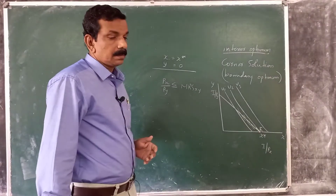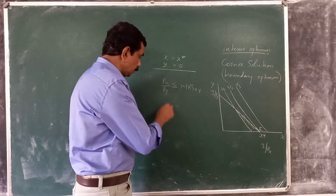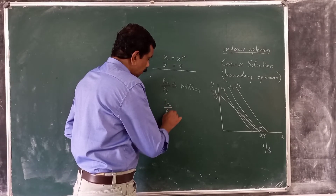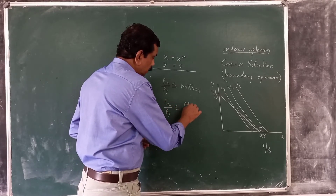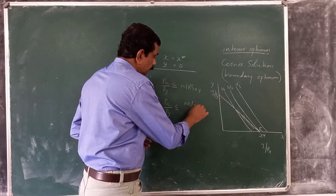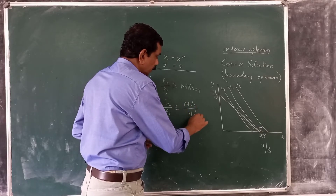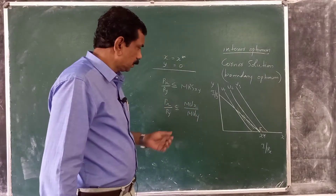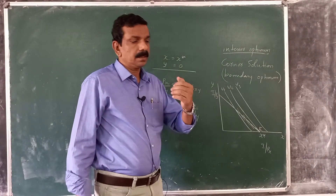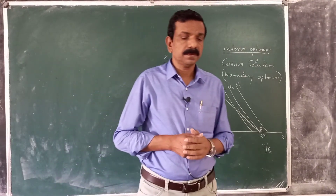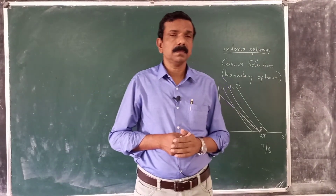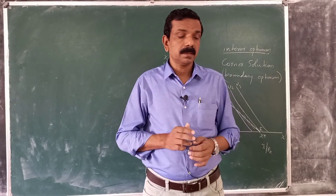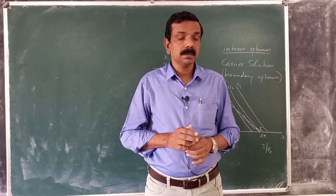So at equilibrium, Px/Py is less than or equal to MUx/MUy. In this case, equilibrium is not defined strictly in terms of equality between MUx/MUy and Px/Py.